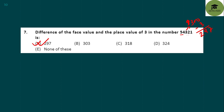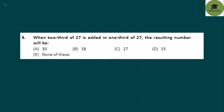When 2/3 of 27 is added to 1/3 of 27, the resulting number will be? The whole number is 27. 2/3 of 27 plus 1/3 of 27 — since 2/3 plus 1/3 equals 1 whole — gives you 27 only. Option C is your correct answer.